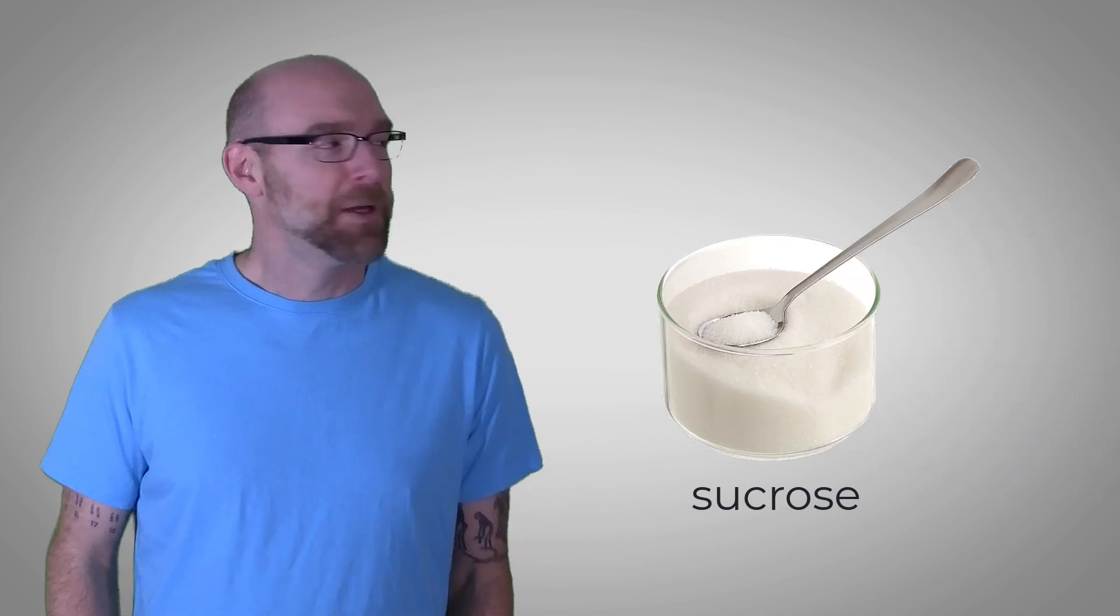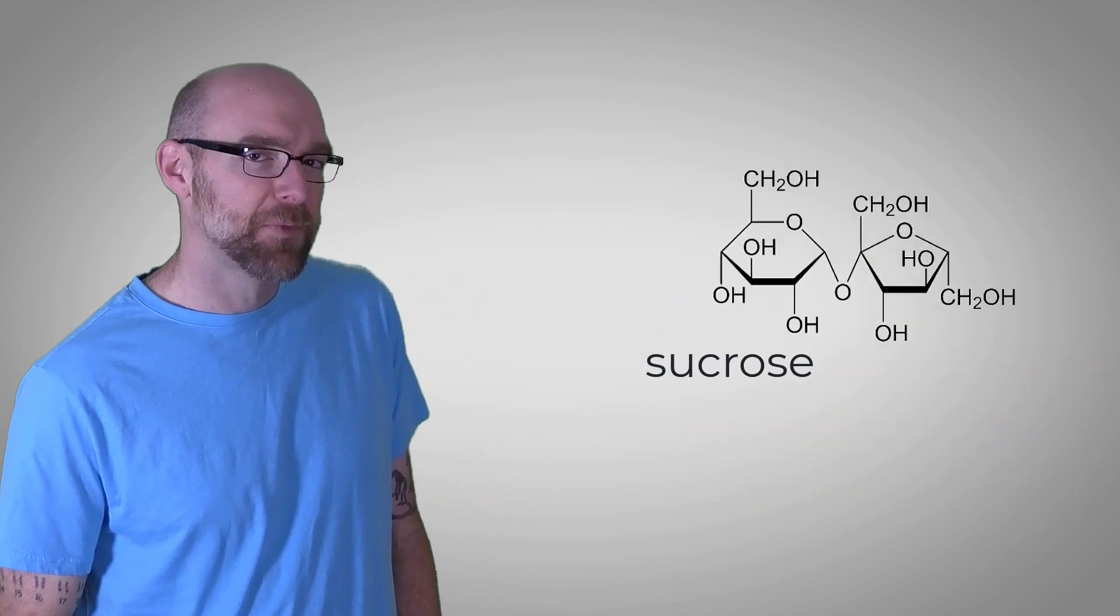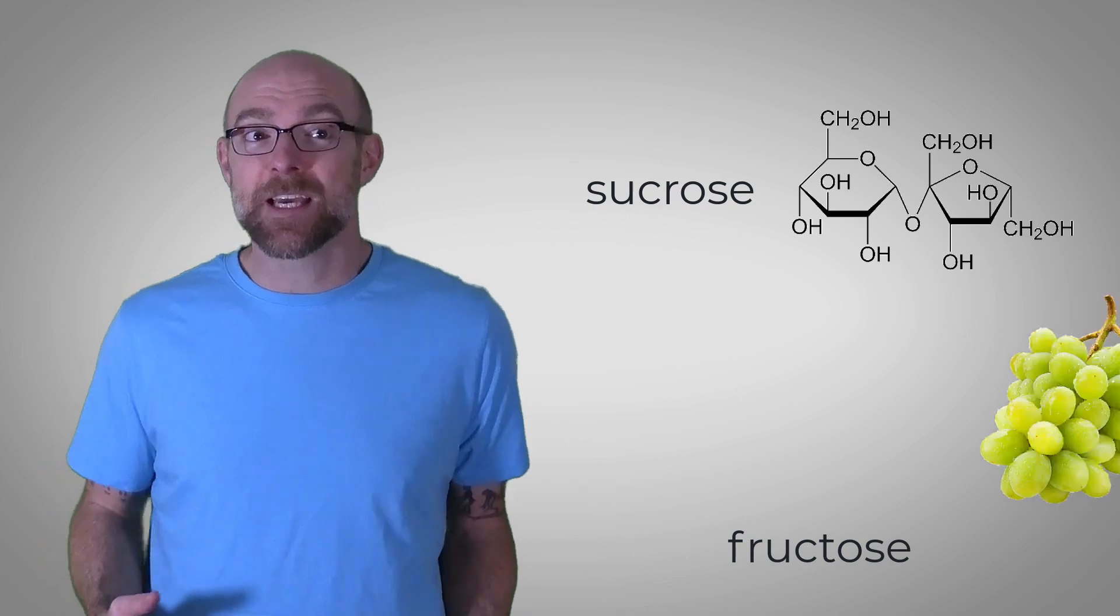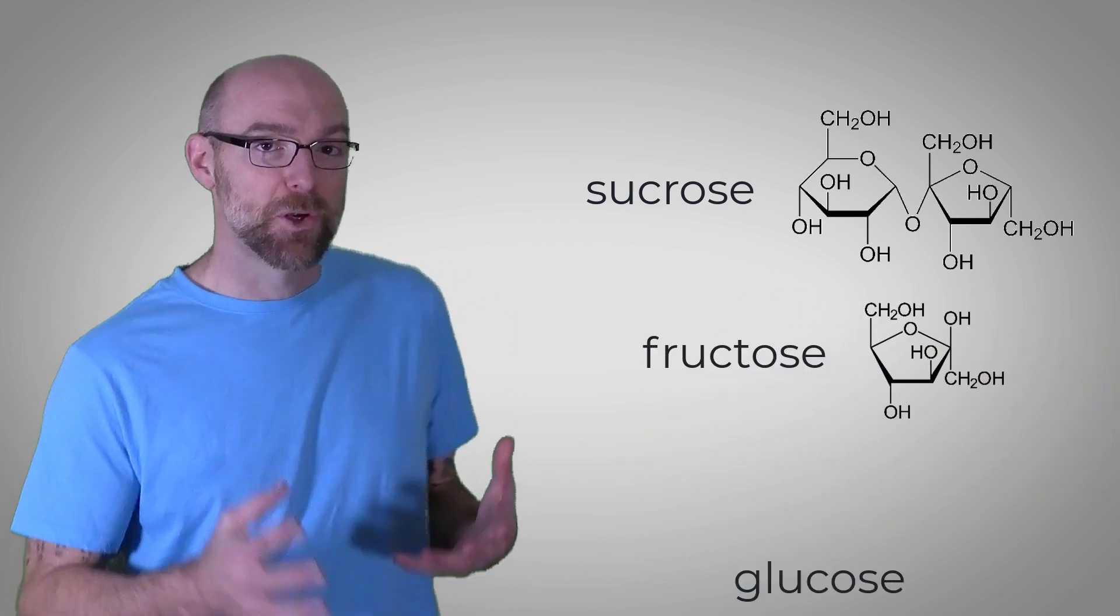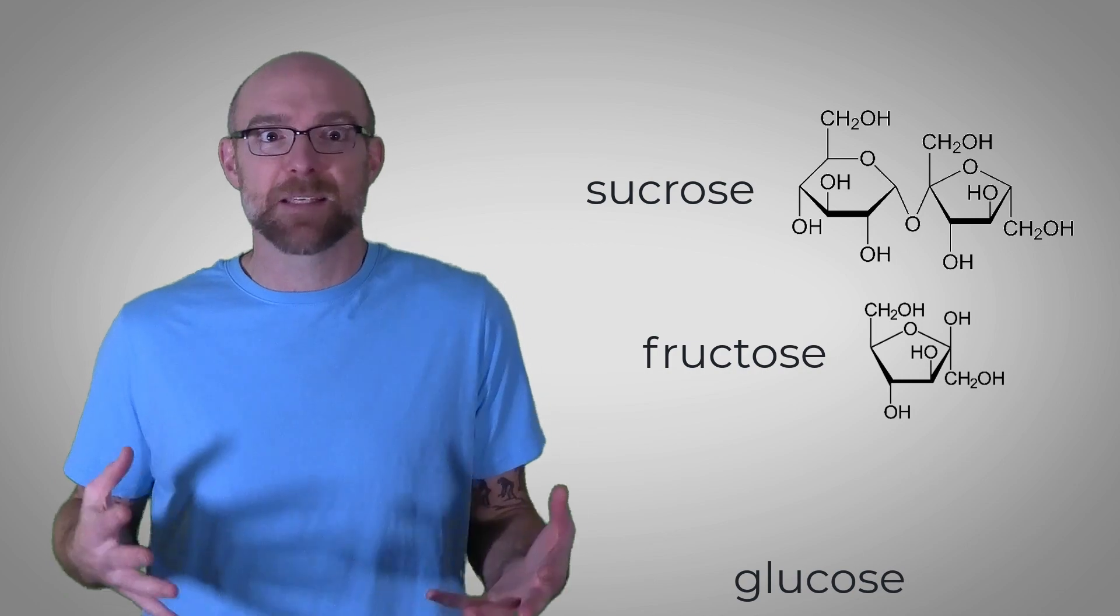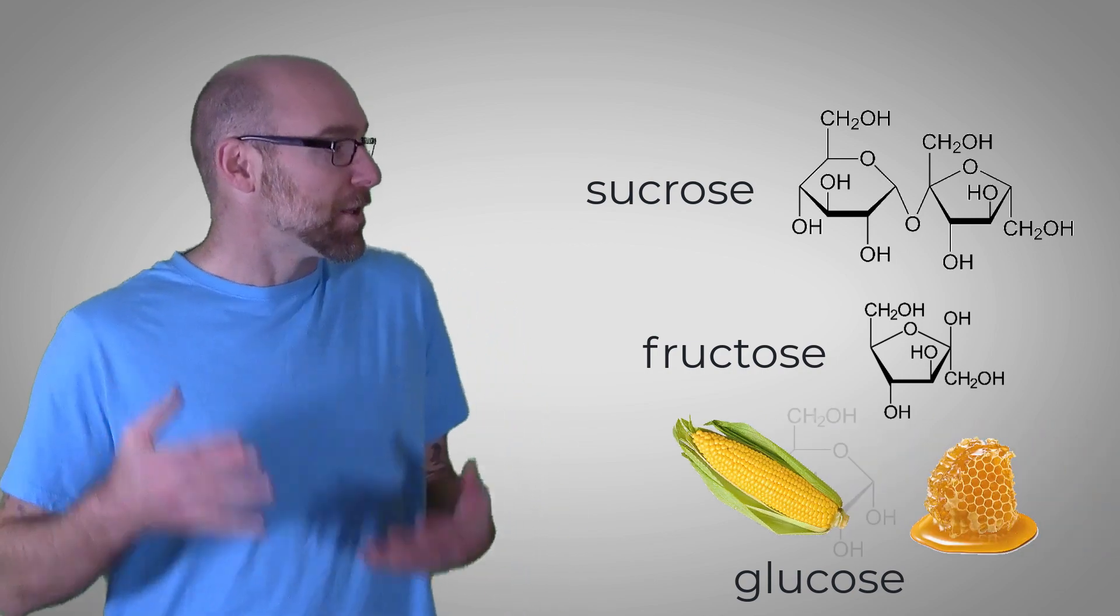Sucrose, or table sugar, looks like this. Fructose, which is one of the key sugars in fruit, looks like this. Glucose, which is another sugar that's abundant in a lot of foods, looks like this.